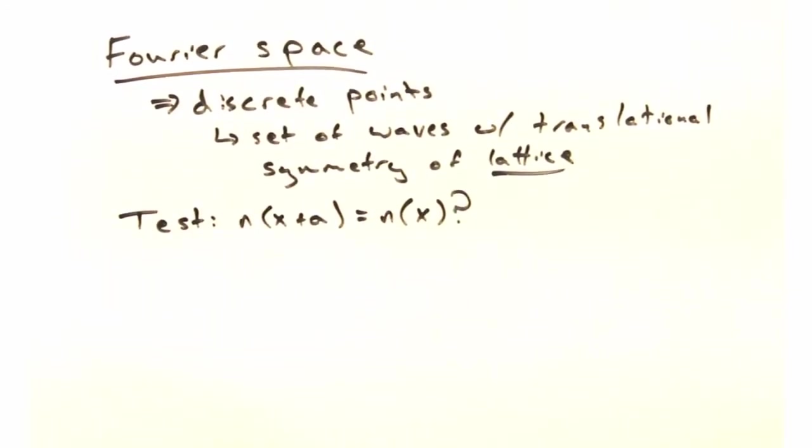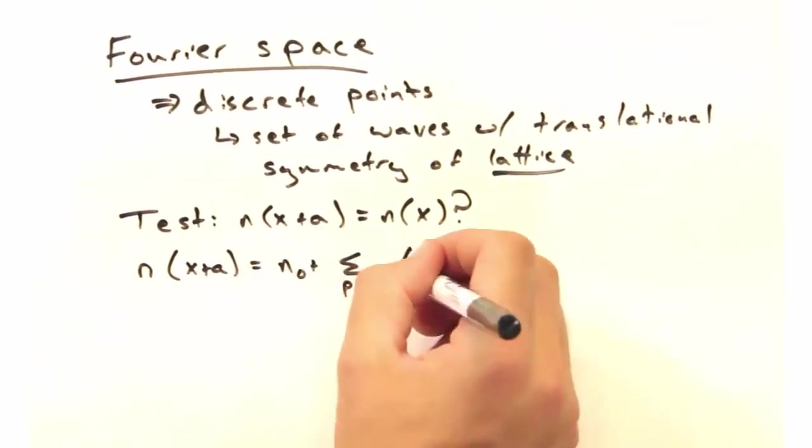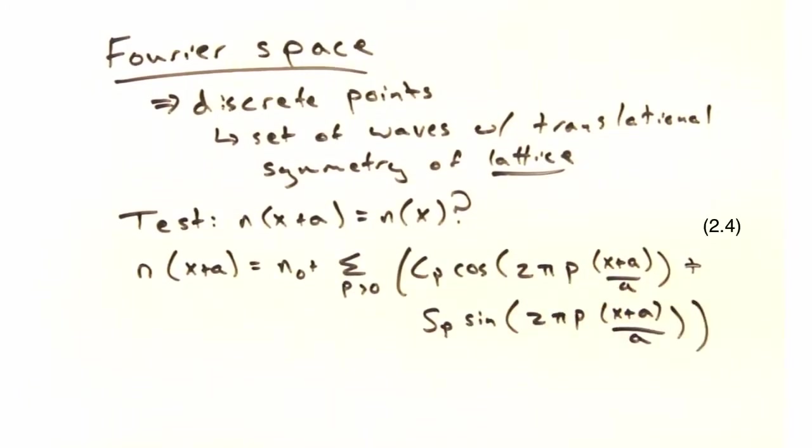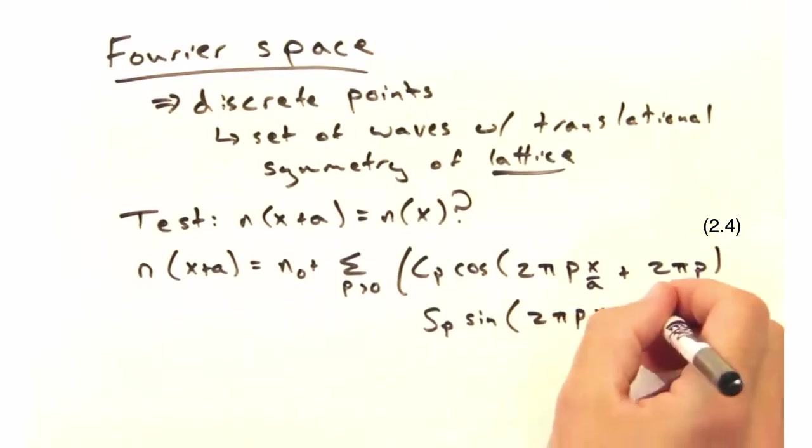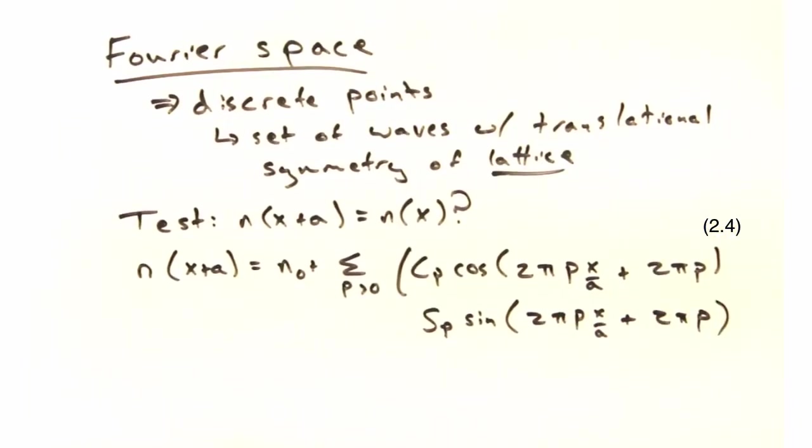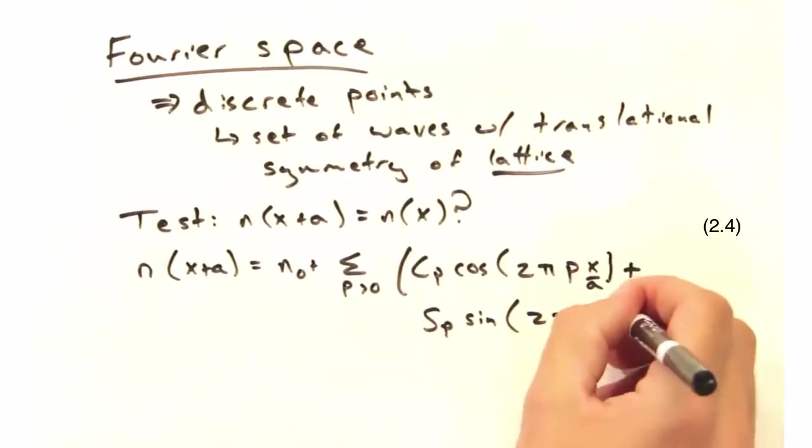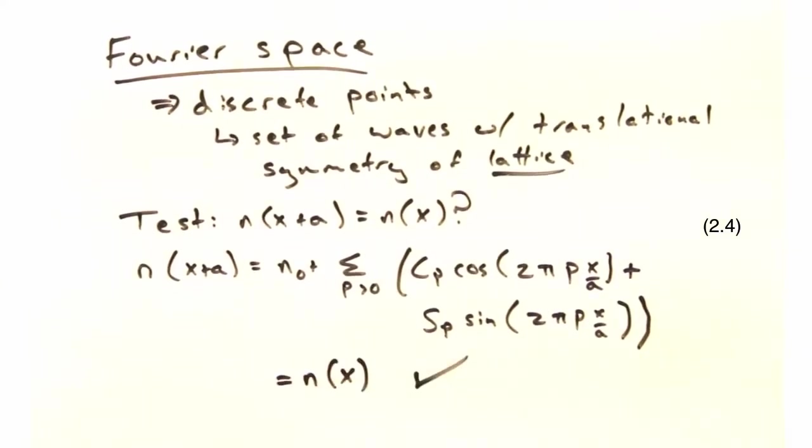Well that's easy. We just need to replace x with x plus a and see if we get back our original n of x. Now using some trig trickery, we can go from this to a more simplified expression. Lo and behold, we get back n of x.